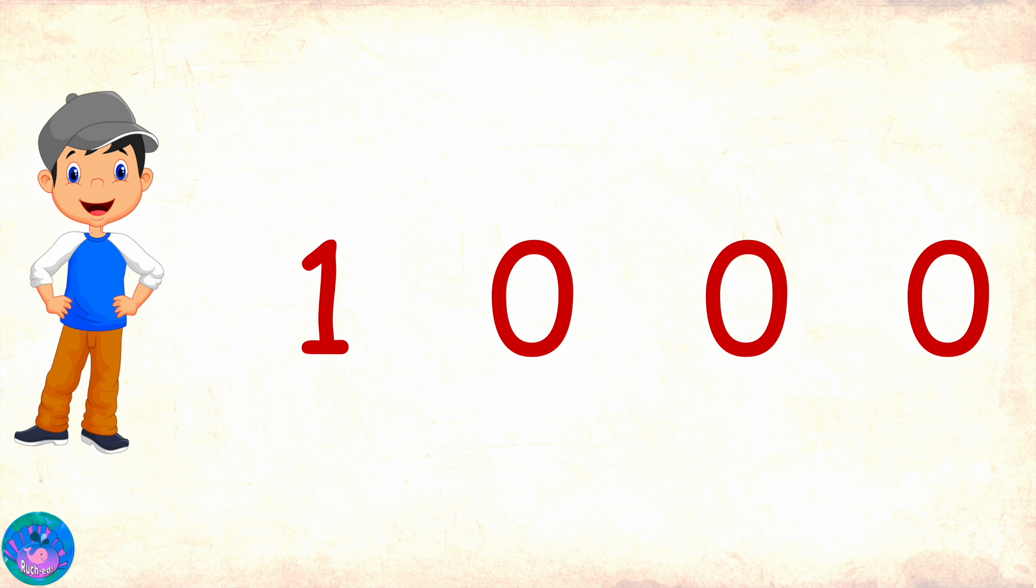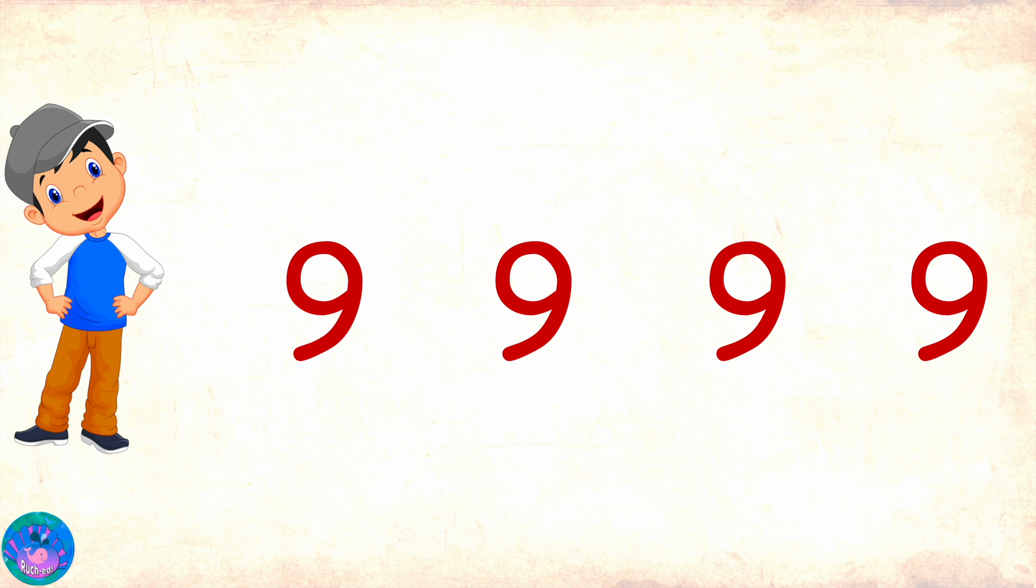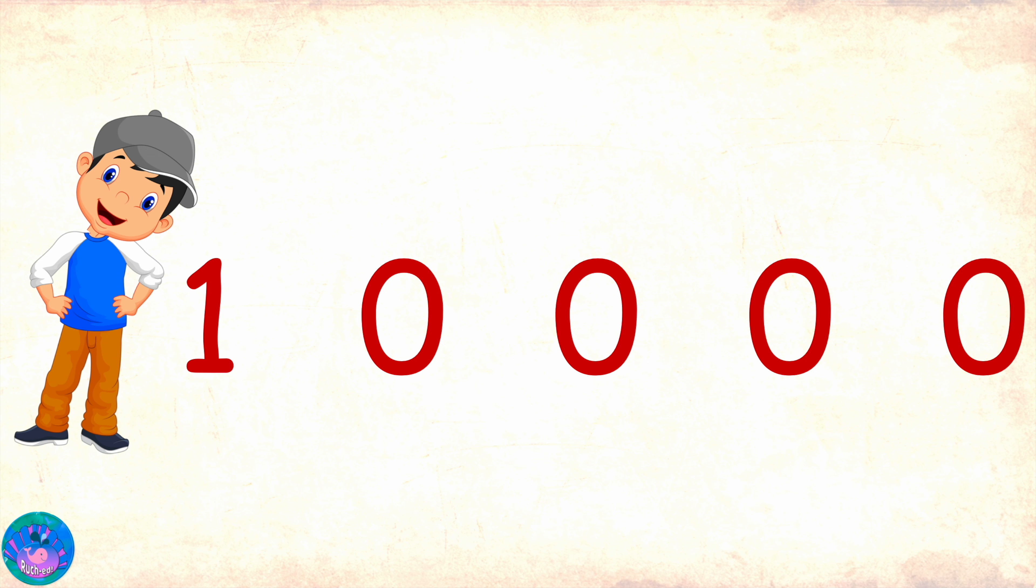Yes, the next number would be the smallest four digit number, which would be one followed by three zeros. And I can also tell you the largest four digit number. Following the pattern, it would be four nines, 9999. And the next number would be the smallest five digit number, one followed by four zeros.